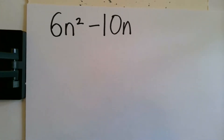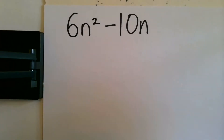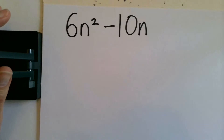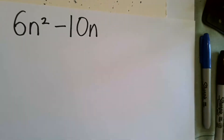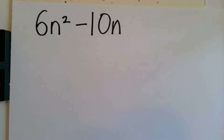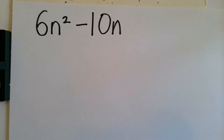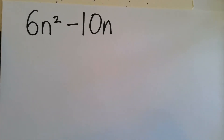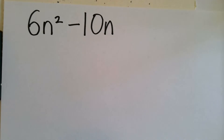Just readjusting the webcam, and then we can start looking at factorising completely. So whenever it says factorise completely, it generally means that there's more than one factor that you've got to take outside a bracket. So it's possible to factorise, but not factorise completely.